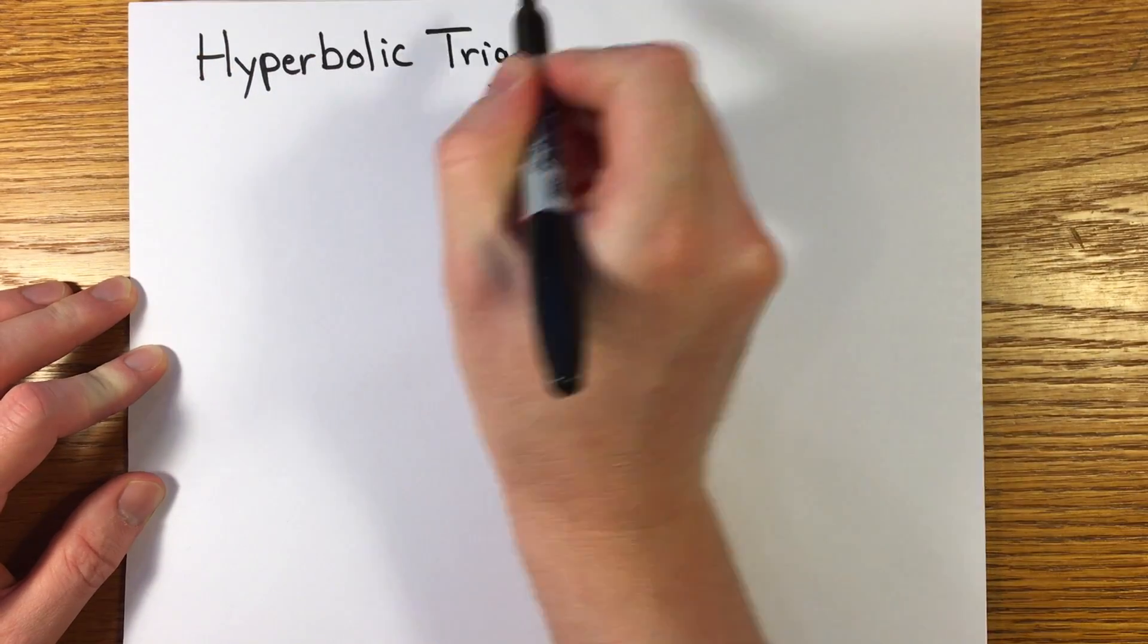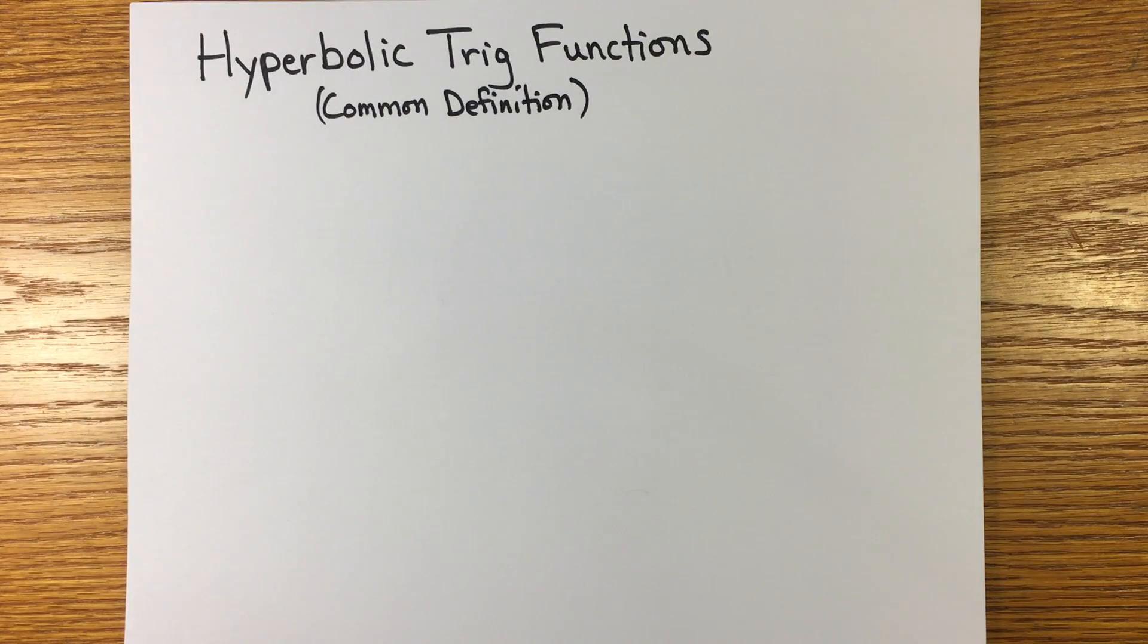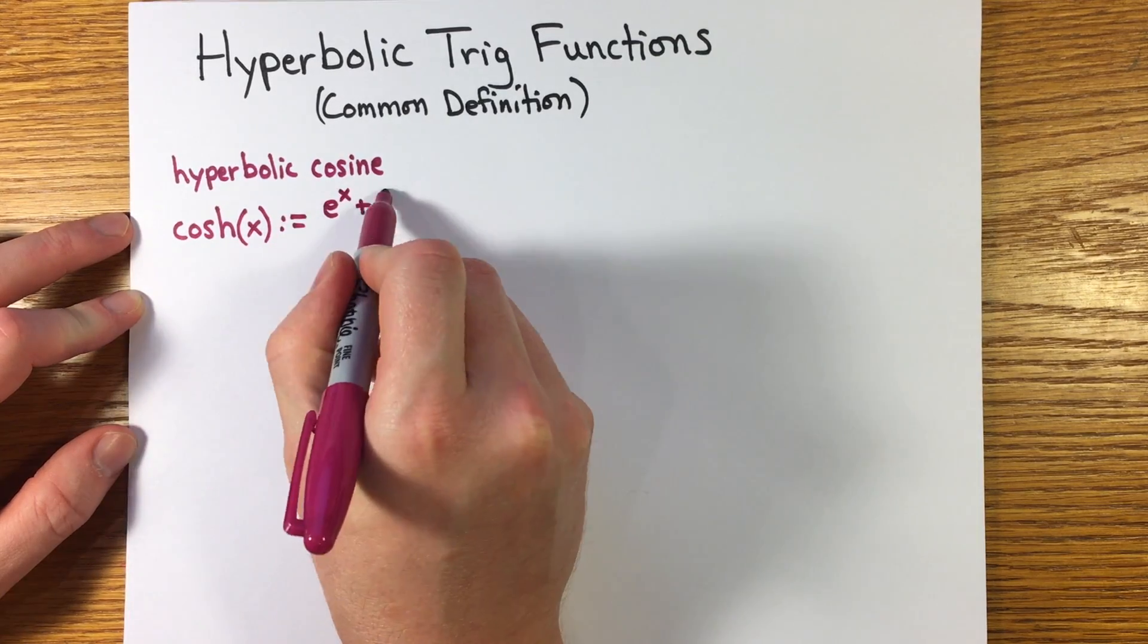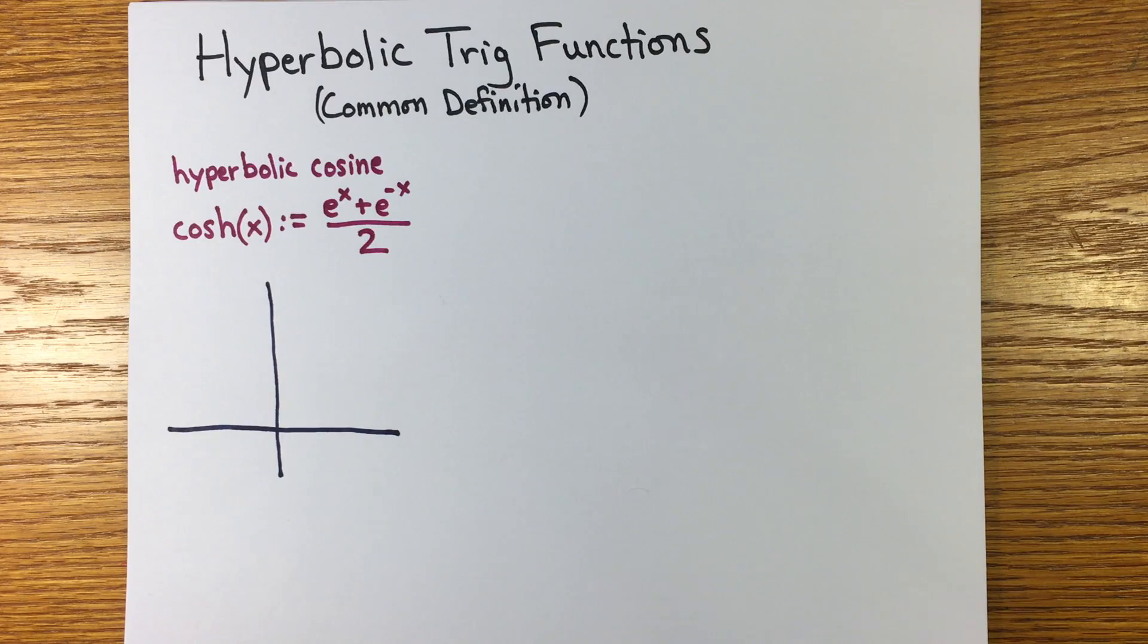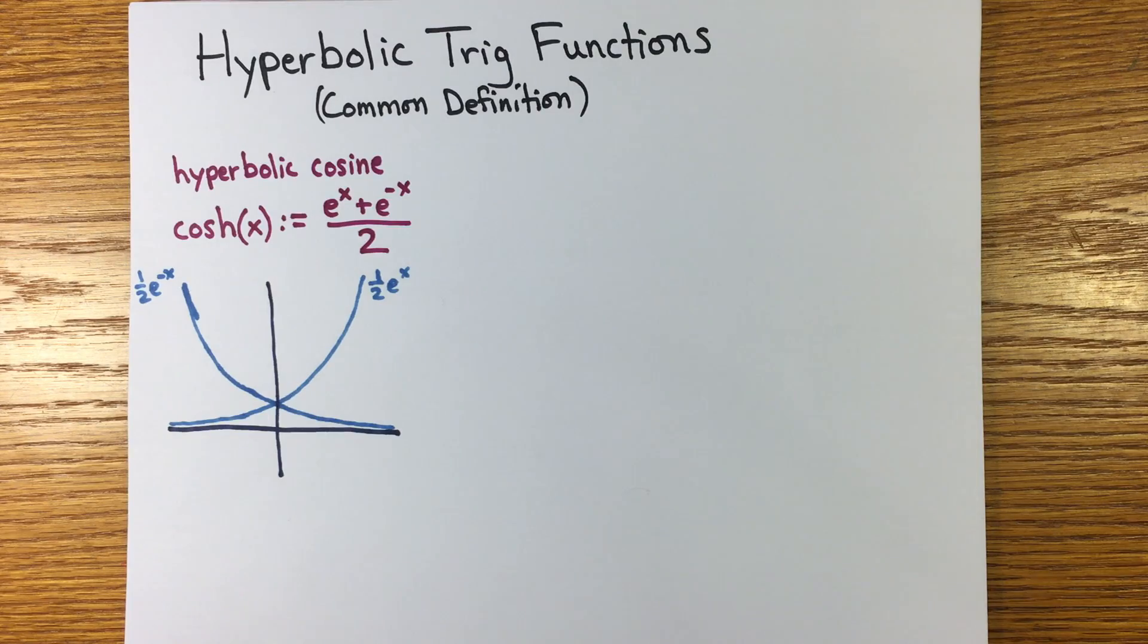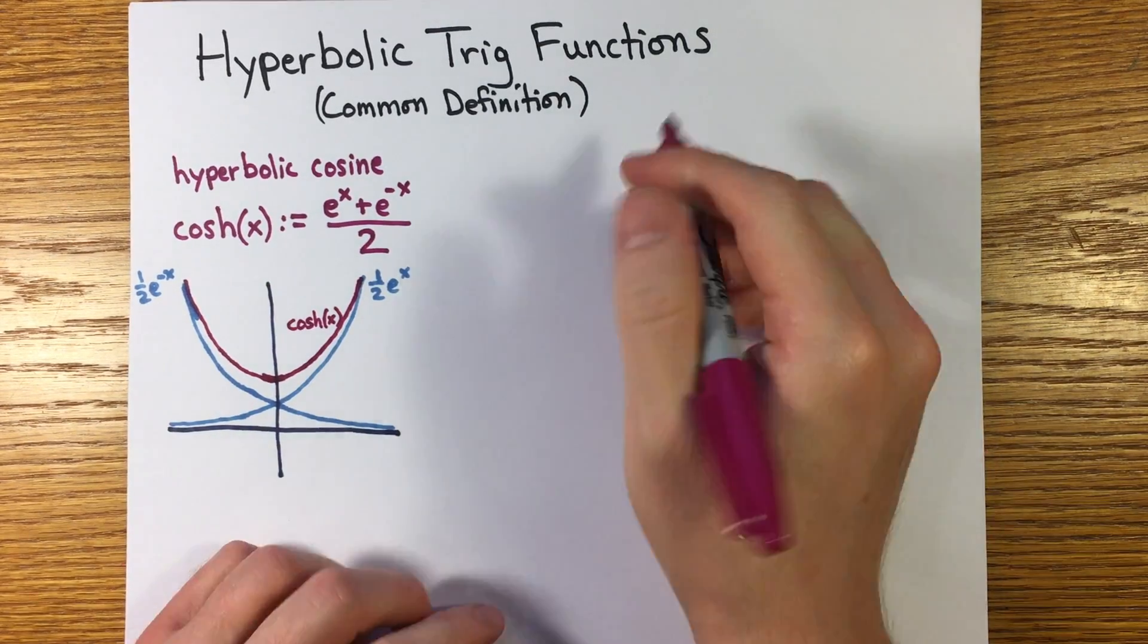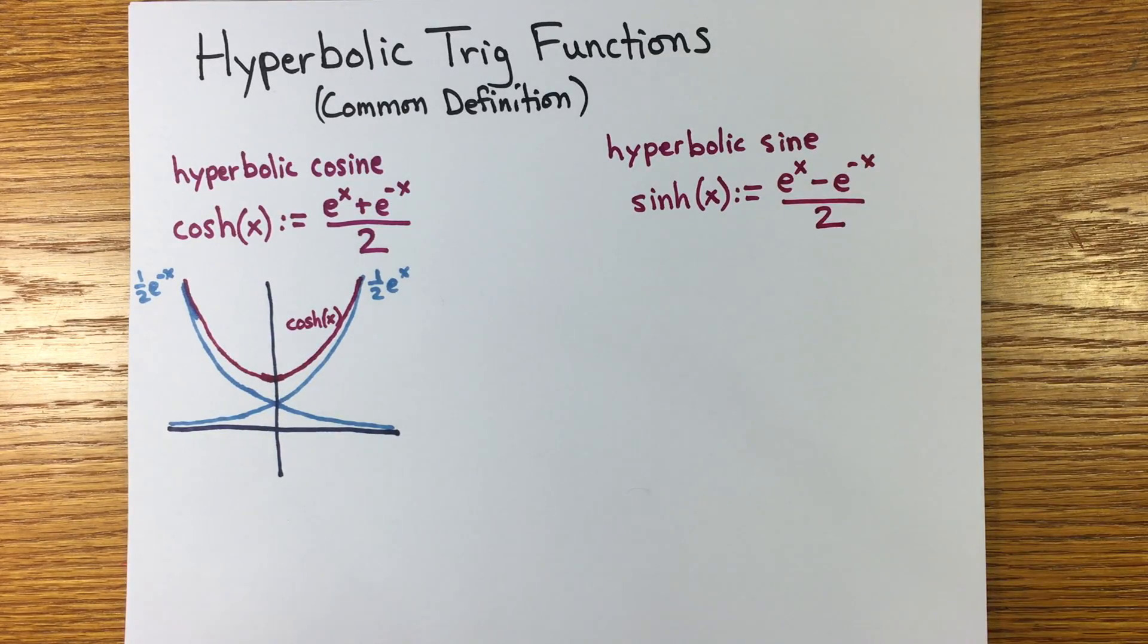So pretty much every calculus textbook defines the basic hyperbolic trig functions this way. The hyperbolic cosine, written c-o-s-h of x and pronounced cosh of x, is equal to e to the x plus e to the minus x all over 2. It's convenient to draw the graph by also including the exponential curves. The graph of cosh looks something like a parabola, but it's not a parabola. It grows exponentially in both directions.